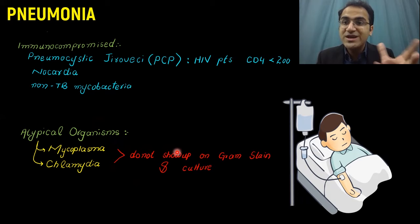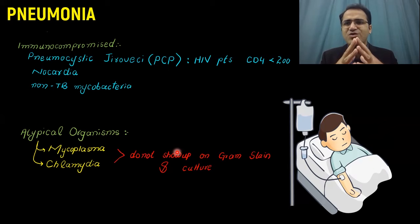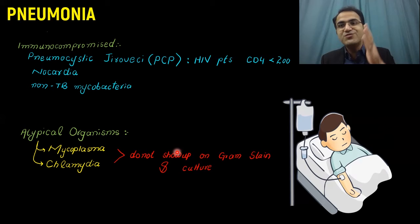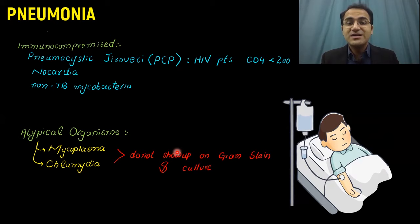Atypical pneumonia is pneumonia that is not very severe. The patient may have fever and mild cough but would be fine and would not seek medical help. As mentioned, mycoplasma and chlamydia cause walking pneumonia — the patient would be infected and walking around as if not ill, causing only mild illness.